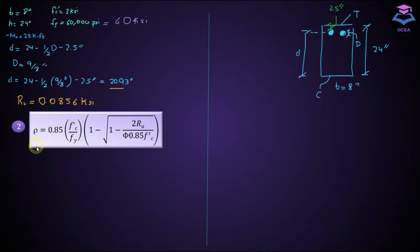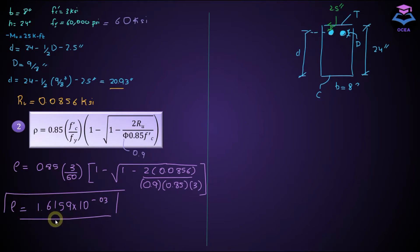If you want to calculate the percentage of steel to be used in the section, fc prime here is equal to 3 ksi, fy here is equal to 60 ksi. We previously calculated Ru, phi here would be equal to 0.9 which is the strength reduction factor for a tension control section. So let's insert all of the values here. And rho from here is equal to 1.6159 raised to the power minus 3.